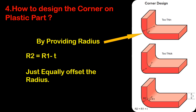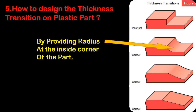Fourth question: how to design the corner on a plastic part? We have to provide a radius on the external and internal edges, and the proportion of the radius needs to be maintained as per the thickness. It should also be equally offset.